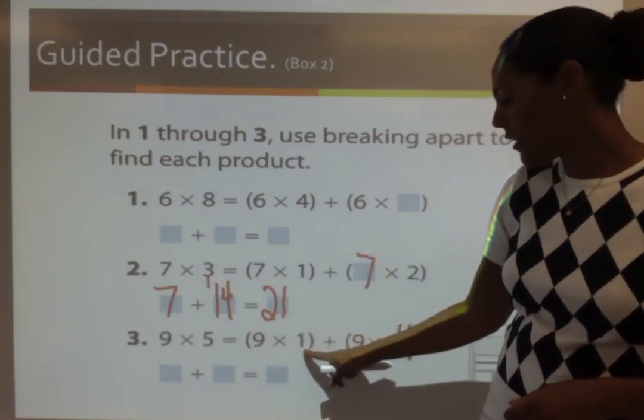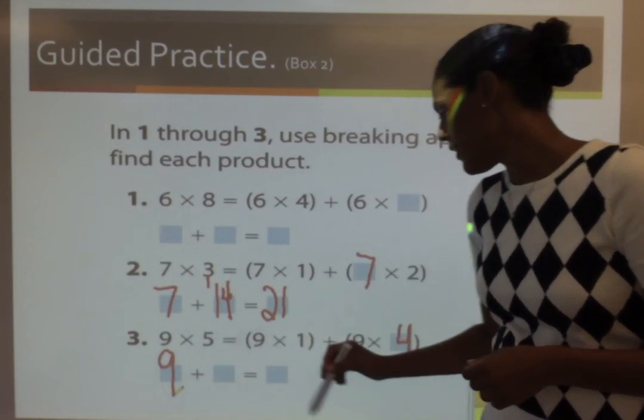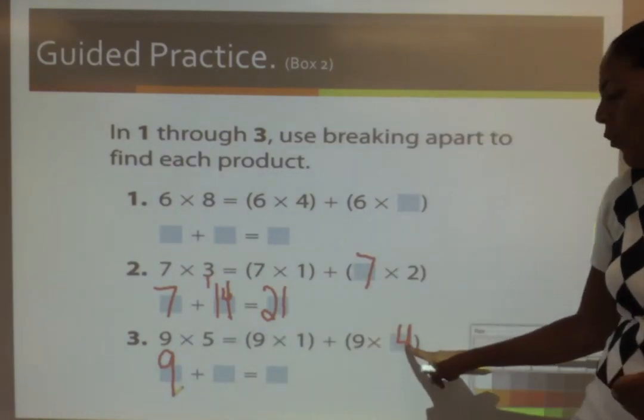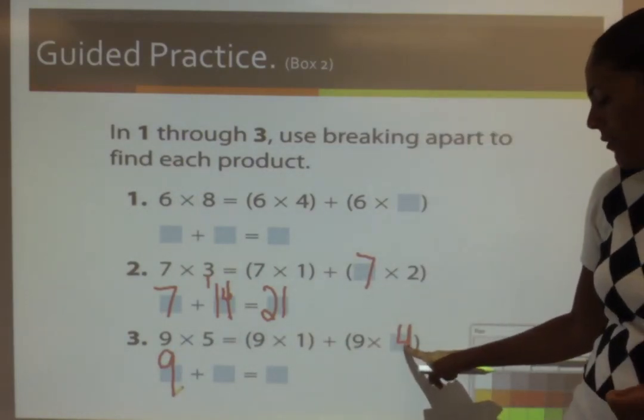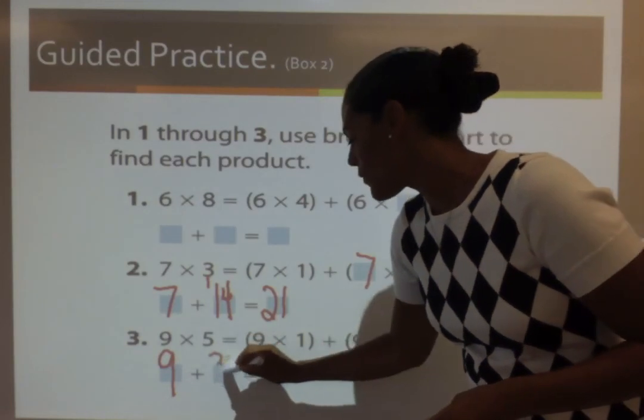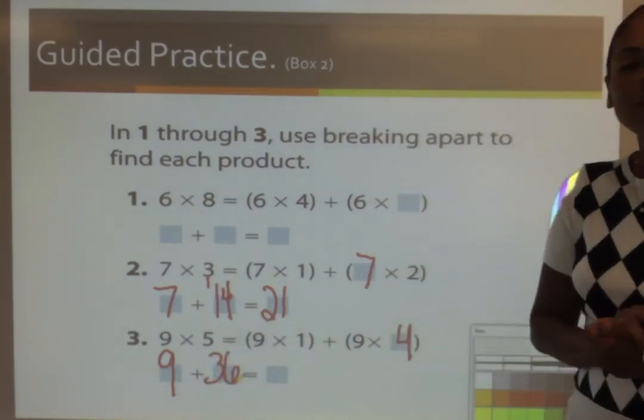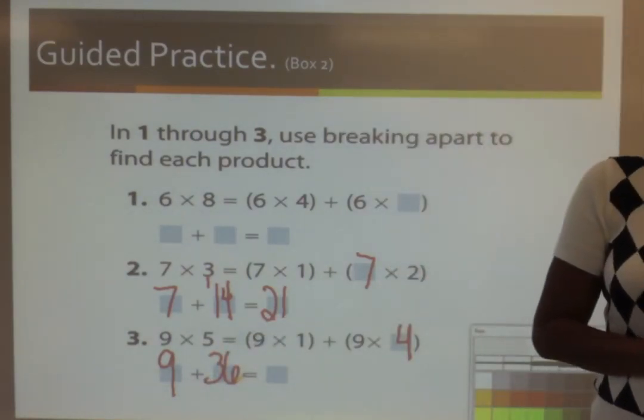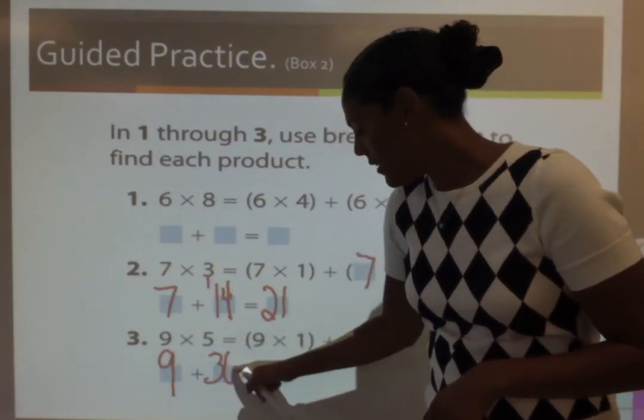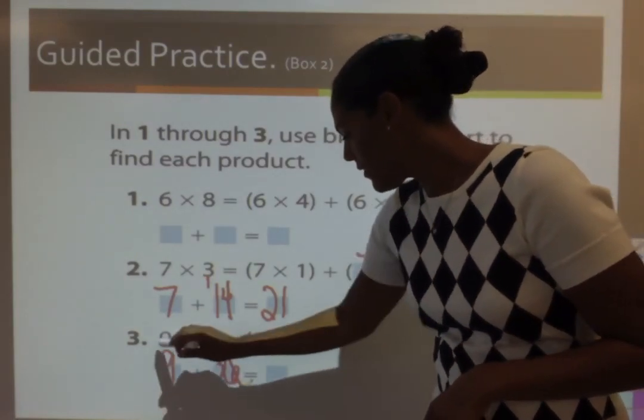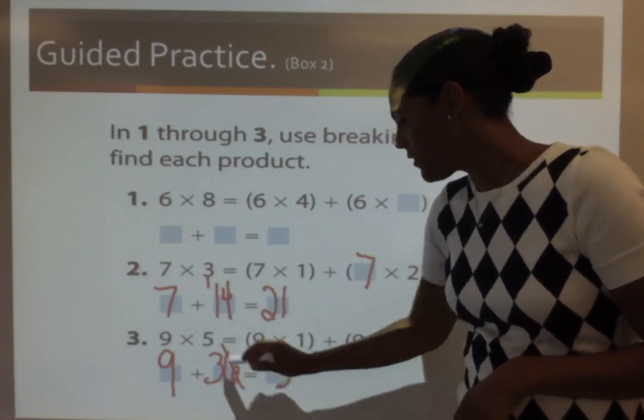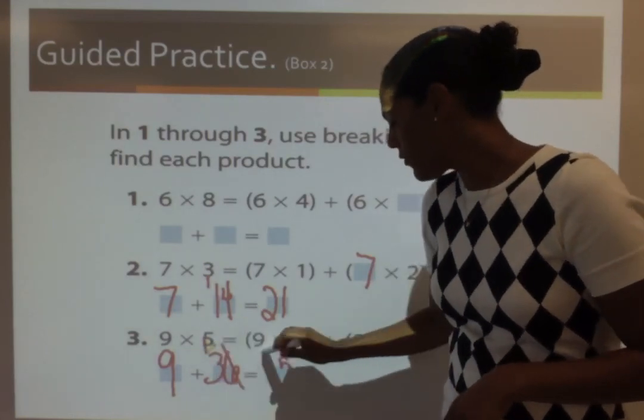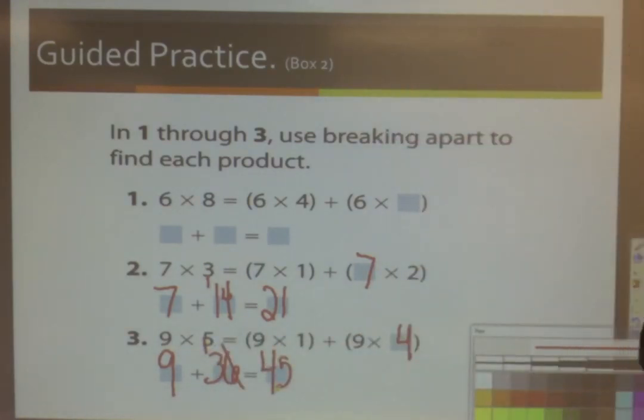So, now I'm going to solve this problem. 9 times 1 is 9. And 9 times 4 is 36. Now, I'm going to add this together. 6 and 9 is 15. 3 and 1 is 4. So, my final answer is 45. And that's how you use the distributive property.